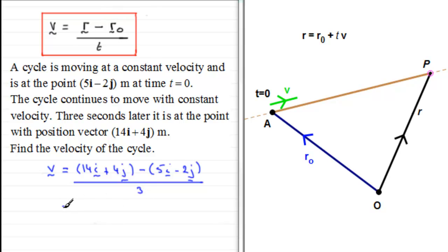If we simplify this now, what we've got is 14i minus 5i. So that's going to be 9i. And then for the j components, we've got 4j minus minus 2j. So it's going to be plus 6j. And that's divided by 3.